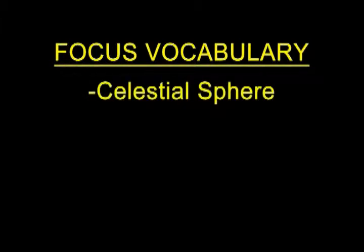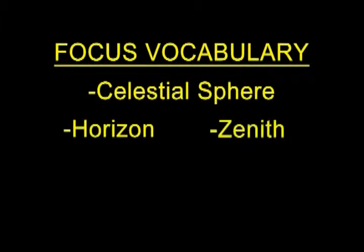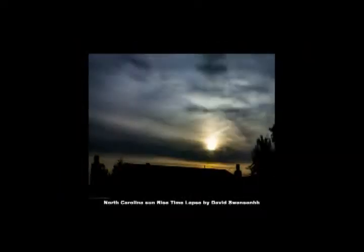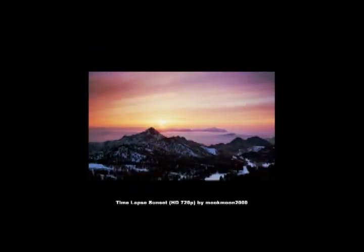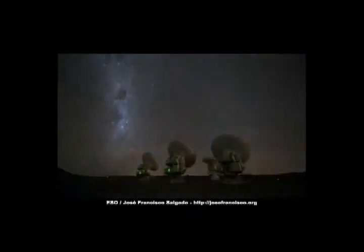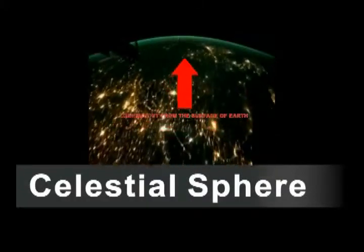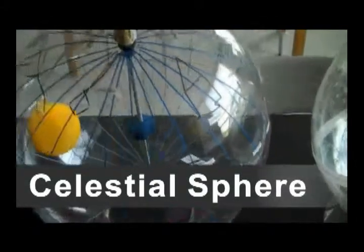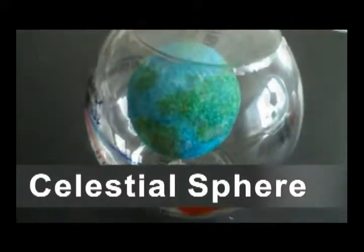Focus vocabulary: celestial sphere, horizon, zenith, azimuth, altitude. From Earth, it appears that the sky moves around us — the sun rises in the east and sets in the west, and the stars do this as well, moving from east to west. The word 'celestial' is used to describe the imaginary sphere that appears to go around the Earth. The celestial sphere is a model that allows us to describe the sky from our point of view here on Earth.